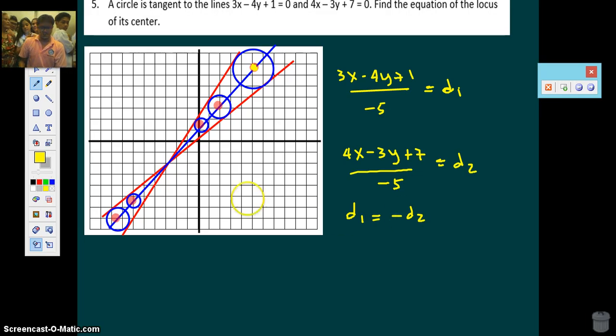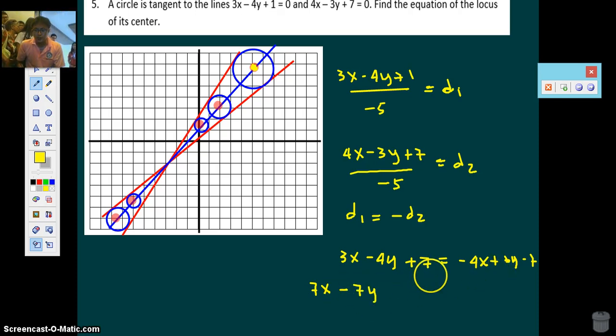Are we doing it right, guys? Yes! Okay, so therefore, since they both have the same denominator, negative 5, all we need to do is negate the other. I'm negating it right away. Negative 4x plus 3y minus 7. Collecting all the terms in one side, we have 7x here. Minus 7y. That would be... This is 1. So plus 8 equals 0. That's it. Number 5.